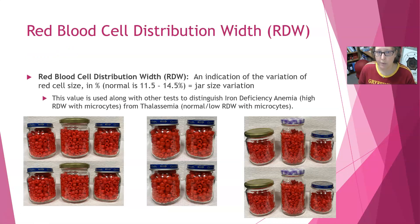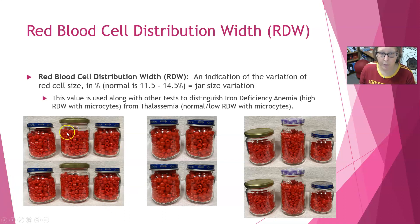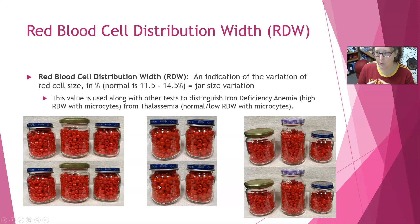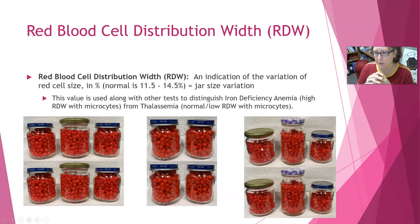The last index is the RDW, or red blood cell distribution width. It's an indication of the variation in red cell size, expressed as a percentage. In our example, that corresponds to variation in the size of the jars. For example, having a mix of normal cells and some small ones causes an increased RDW percentage. If all jars are the same size, you'd have a normal RDW. Having a really big jar, a small jar, and a normal jar together would produce an even bigger RDW.